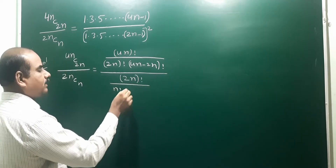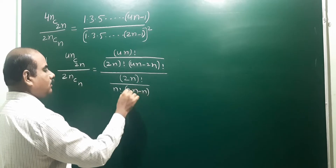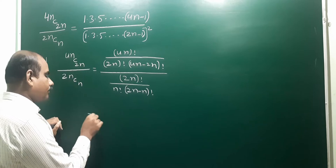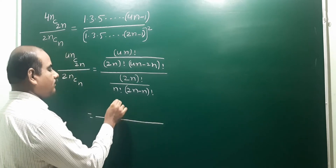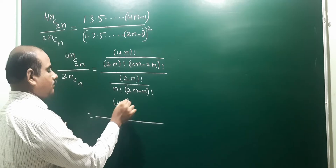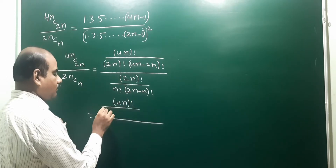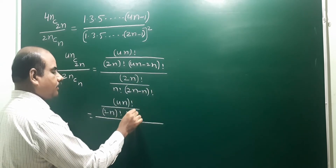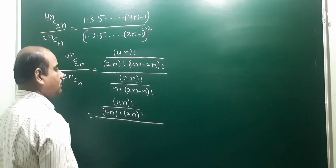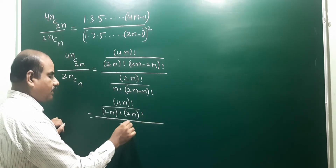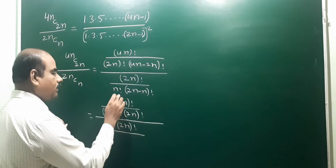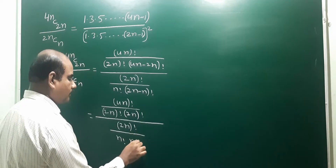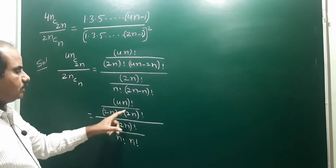For 2nCn using the same nCr formula: 2n! / (n! · (2n-n)!) = 2n! / (n! · n!). Now we divide: LHS = [4n! / (2n! · 2n!)] divided by [2n! / (n! · n!)], which gives 4n! / (2n! · 2n!) multiplied by (n! · n!) / 2n!.